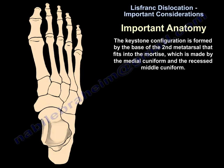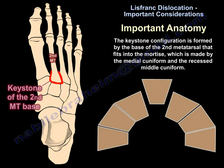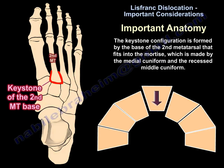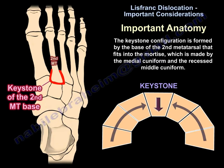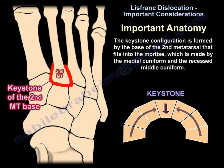There is a keystone configuration in which the base of the second metatarsal fits into a mortise made by the medial cuneiform and the middle cuneiform.